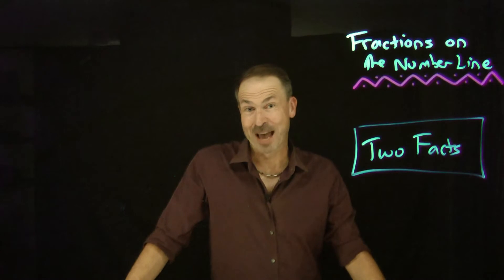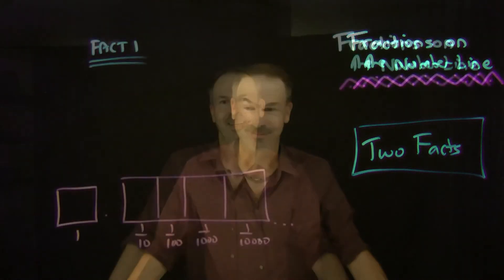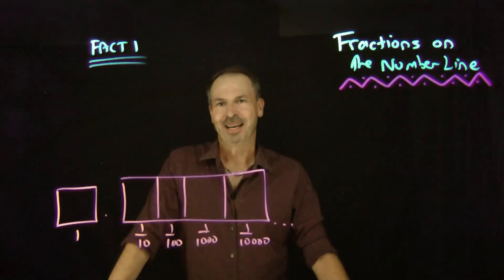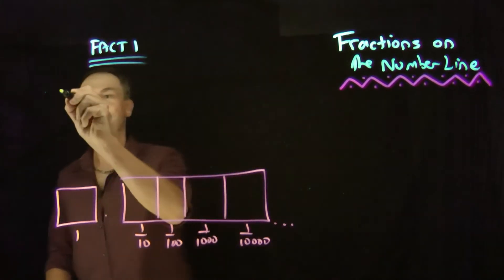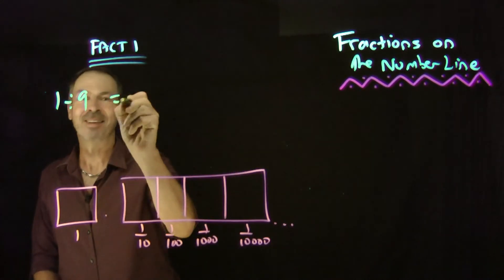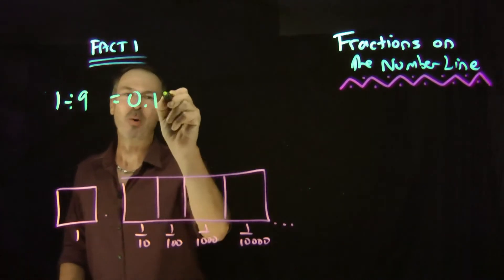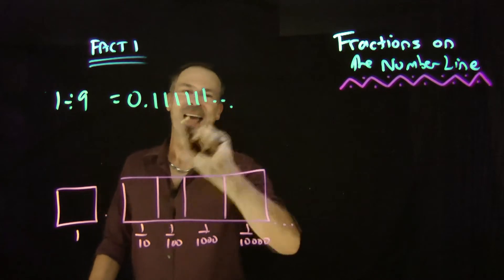To prove that, we'll need two facts. According to my calculator, 1 divided by 9 — 1 ninth — equals 0.111111 forever.